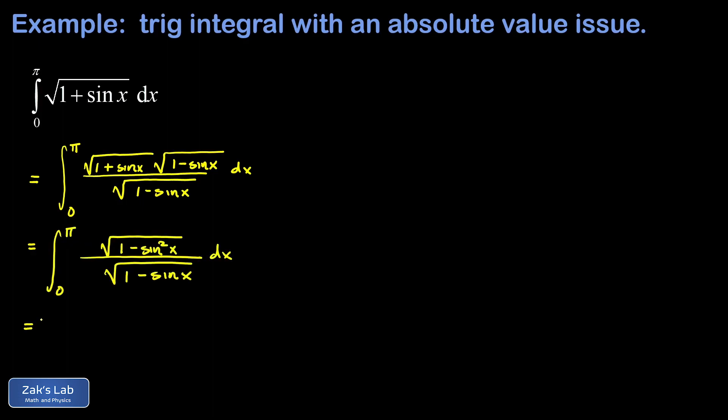This is where we get the payoff of the conjugate strategy. 1 minus sine squared is cosine squared.